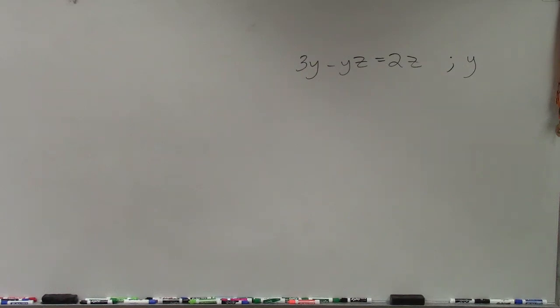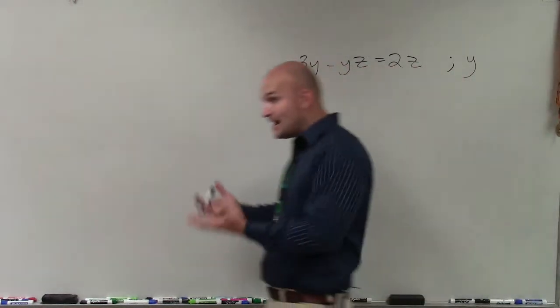So to solve a problem like this, we have 3y minus yz equals 2z. Obviously, when we're solving multi-step equations, if you guys remember, we need to combine the variables, right?